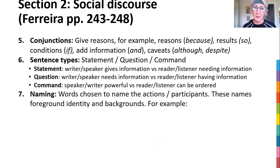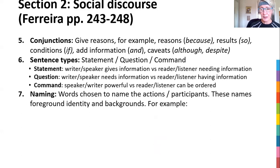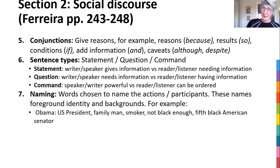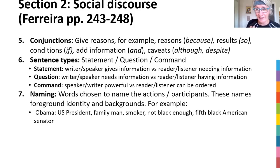Naming is how we name people and their actions and how we describe them. These names often give people an identity and their background — something about where they come from. For example, looking at Barack Obama: you can call him a US president, you can call him a family man, a smoker — there's a social message coming through — or 'not black enough,' which is also a social message, or 'fifth Black American senator.' Different ways you can label people, and this puts an identity on them.